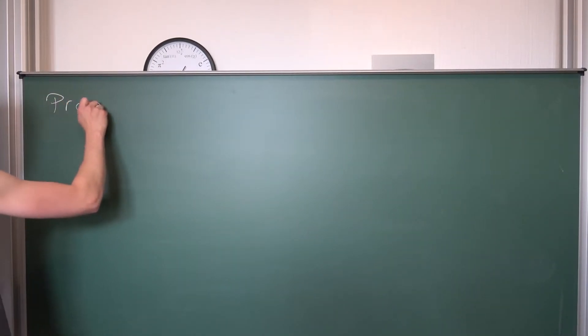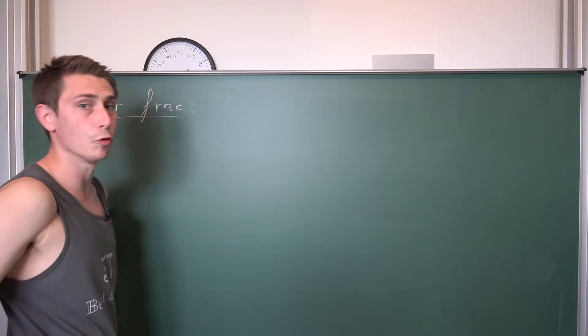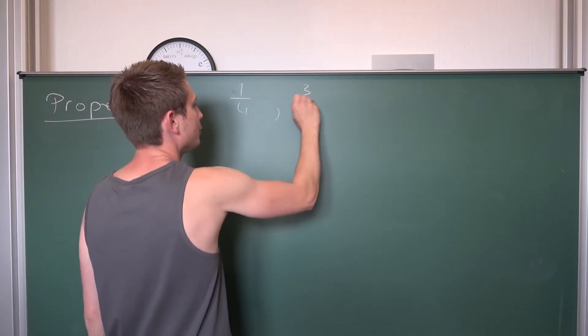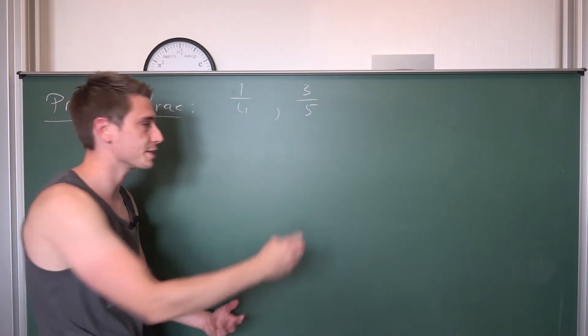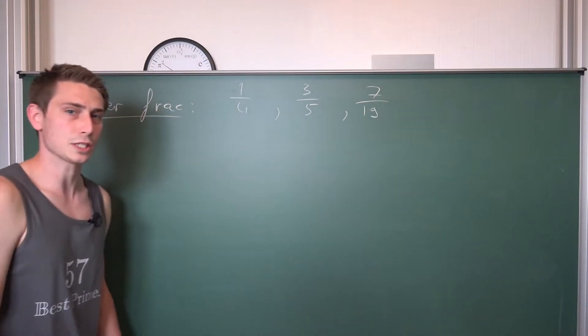Proper fractions are fractions of the form, for example one quarter, or three fifths, or for example 7 over 19. So you might notice something here.